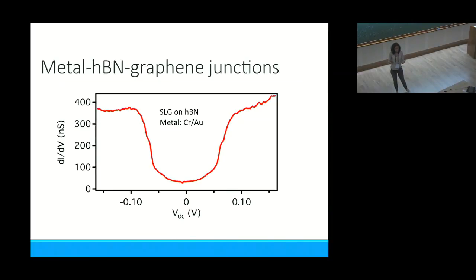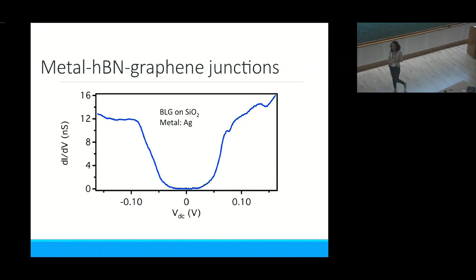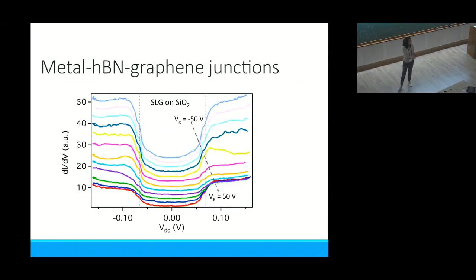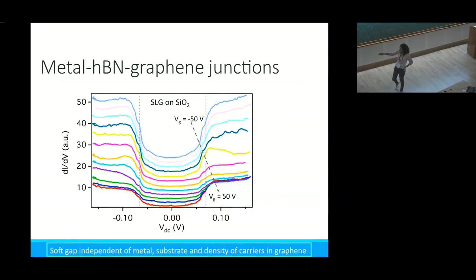The question is where is this coming from? We changed the type of metal, the type of substrate, and the type of graphene. Single layer graphene on boron nitride with chrome-gold, bilayer graphene on silicon oxide with silver, and graphite on silicon oxide with chrome-gold. There are small deviations but that bucket-like feature still remains. We could apply a gate voltage to the graphene layer, which changes the density. The dI/dV has this bucket shape for all gate voltages. We have a very soft gap where tunneling is suppressed at low biases, independent of metal, substrate, and density of carriers in graphene.